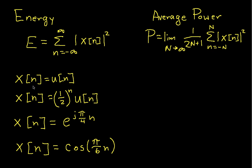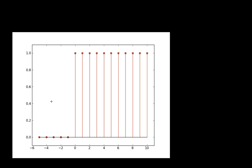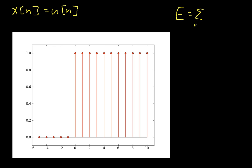Our first signal will be x(n) is the unit step function. The unit step function is 0 until n reaches 0, and then it's 1. The energy is going to be the sum from n going from minus infinity to infinity of the magnitude squared of x(n).